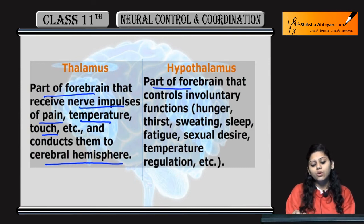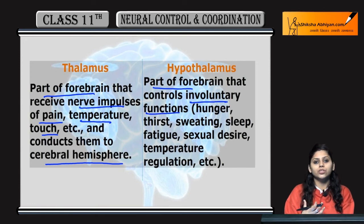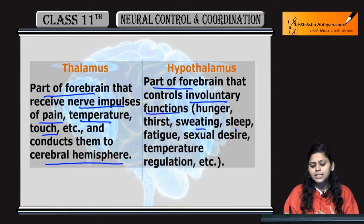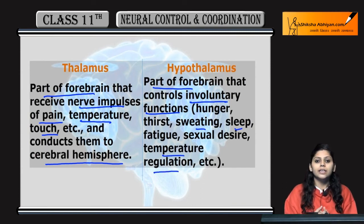Hypothalamus is also part of forebrain. Jo control karta hai involuntary functions ko, like thirst, hunger, sweating, sleep, fatigue, sexual desire, temperature regulation, etc.